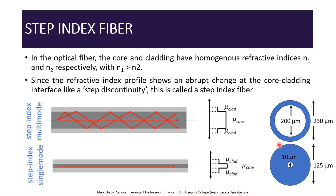For a single-mode step index fiber, only a single light pulse can be transmitted through it. The cladding has a diameter of 125 micrometers, whereas the core has a dimension of only less than 10 micrometers — it is very small. Both fiber types have uses in different fields. When light is transmitted through a multimode step index fiber, it may be distorted at the receiving end, whereas in a single-mode step index fiber the pulse does not get distorted as such.